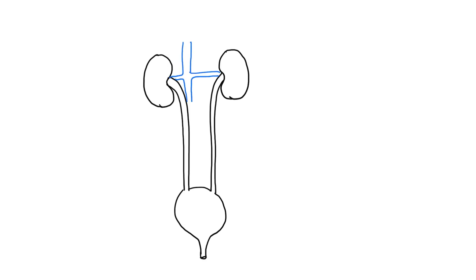The tubes are slightly expanded near the bean-shaped structure and then we make a straight tube down. Where the tubes end, we draw a pear-shaped sack-like structure as shown here. Next, this structure has to be extended to form a small tube at the end. After this, we draw the blood vessels — two main blood vessels which branch into each kidney as shown here.